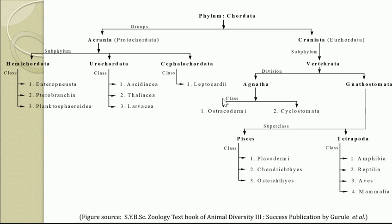We are going to deal with the introduction to the group Protochordata. These chordates are a large heterogeneous group of animals that differ from one another in many respects, and in the broad sense this phylum Chordata is divided into two groups. The first group is referred as Acrania, also referred as Protochordata, and the second group is referred as Craniata, or also referred as Euchordata. Euchordate means they are referred as true chordates, and Protochordata means these are the primitive chordates.